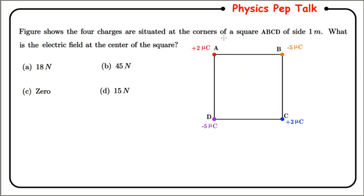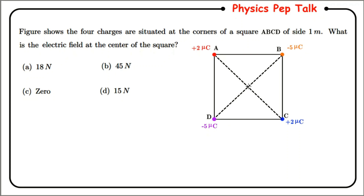Let us look into the next question. The figure shows four charges at the corners of a square ABCD of side one meter. What is the electric field at the center of the square? Point A has plus two micro coulomb, point B has minus five micro coulomb, point C has plus two micro coulomb, and point D has minus five micro coulomb. We need to calculate the electrical field at the center, which is the point of intersection of the two diagonals.